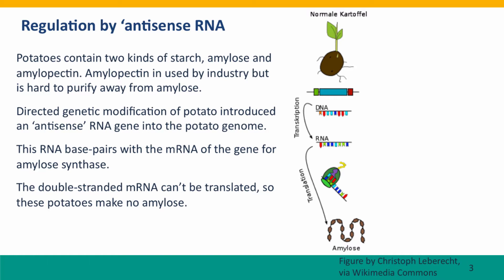Potatoes, of course, are full of starch, and there are two kinds of starch. One of them, amylopectin, is very widely used in industry, but it's hard to purify it away from the other starch, amylose. So plant biologists developed a way to turn off the gene for amylose — the gene that synthesizes amylose, amylose synthase.